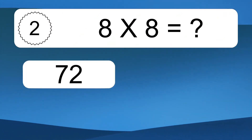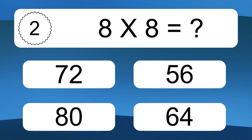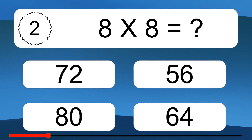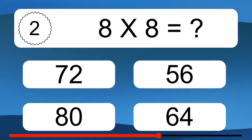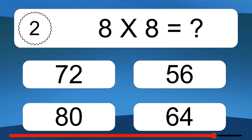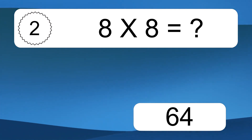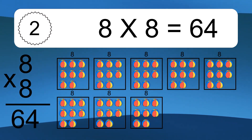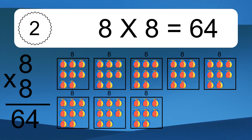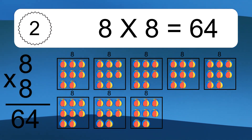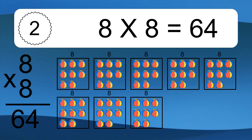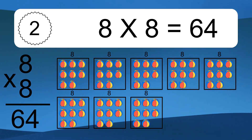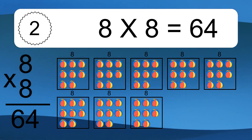8 times 8 equals what? 8 times 8 equals 64. We have 8 boxes, and each box has 8 colorful balls inside. If you count all the balls in all the boxes together, you will have 8 times 8 balls. This equals 64 balls.